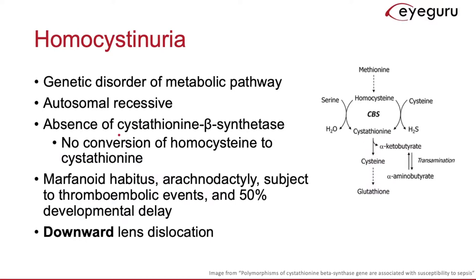Like Marfan syndrome, homocystinuria can also cause lens dislocations. Homocystinuria is a genetic disorder of a normal metabolic pathway. It is autosomal recessive and is characterized by the absence of cystathionine beta-synthetase, or CBS. Without CBS, homocystine cannot be converted into cystathionine, and homocystine builds up.